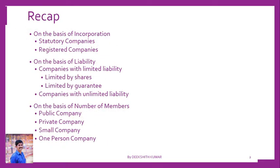In the last video, we started with the classification of companies. On the basis of incorporation, there are two types: statutory companies and registered companies. On the basis of liability, companies with limited liability and companies with unlimited liability. Companies with limited liability can be further classified into limited by shares or limited by guarantee. And the last category we have seen is on the basis of number of members: public company, private company, small company, and one-person company.